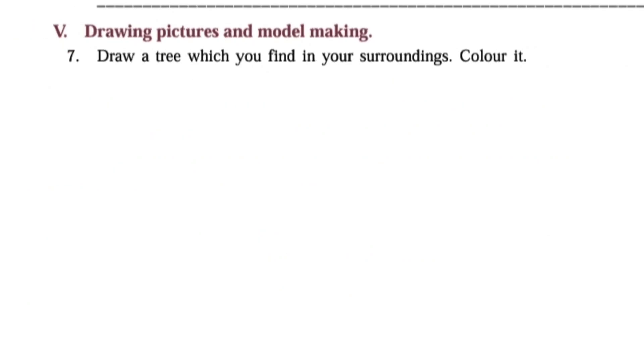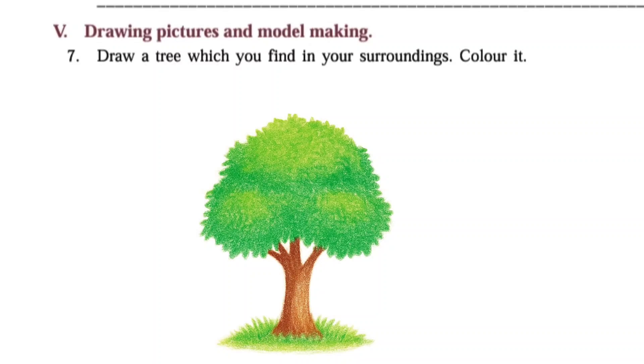Fourth one: Information skills Project work. Collect some aromatic leaves in your surroundings and name them. Here you have to collect some aromatic leaves. Example: Tulasi, mint. Fifth one: Drawing pictures and model making. Draw a tree which you find in your surroundings and color it. Students have to draw a picture of the tree and color it. Here I have given a tree picture. You can draw like this.